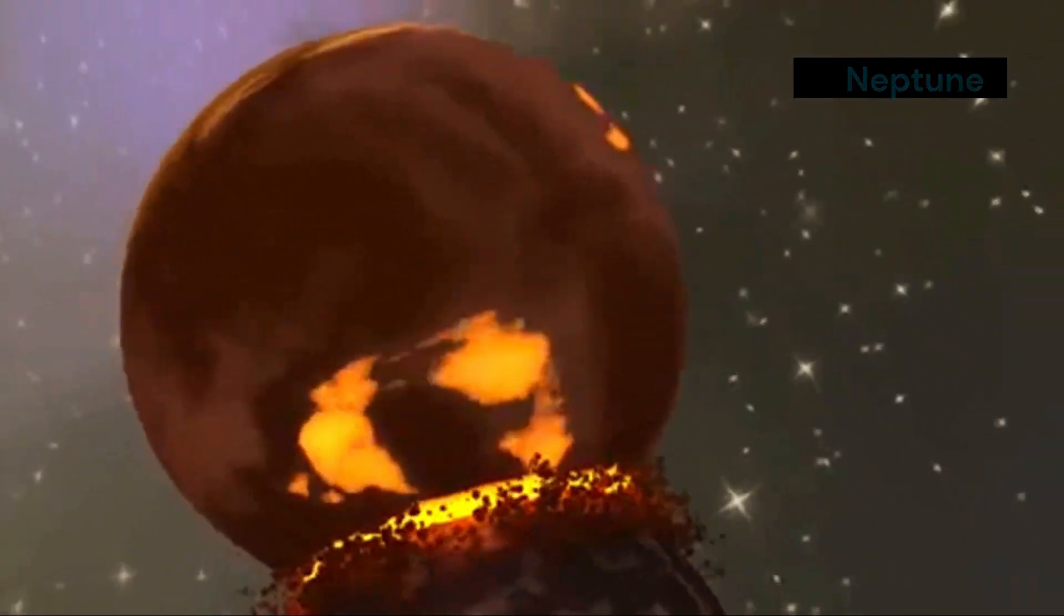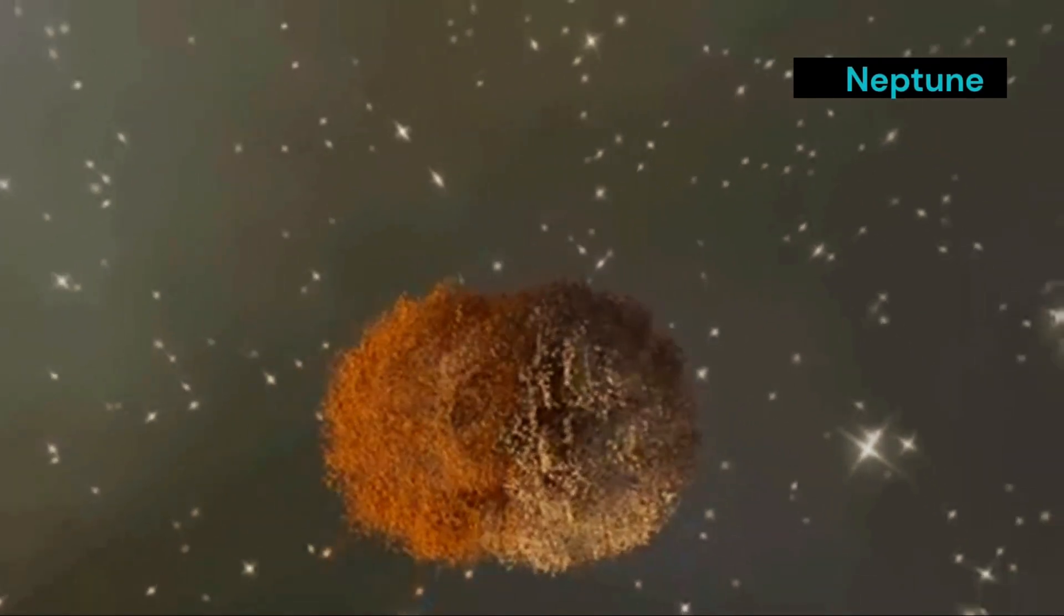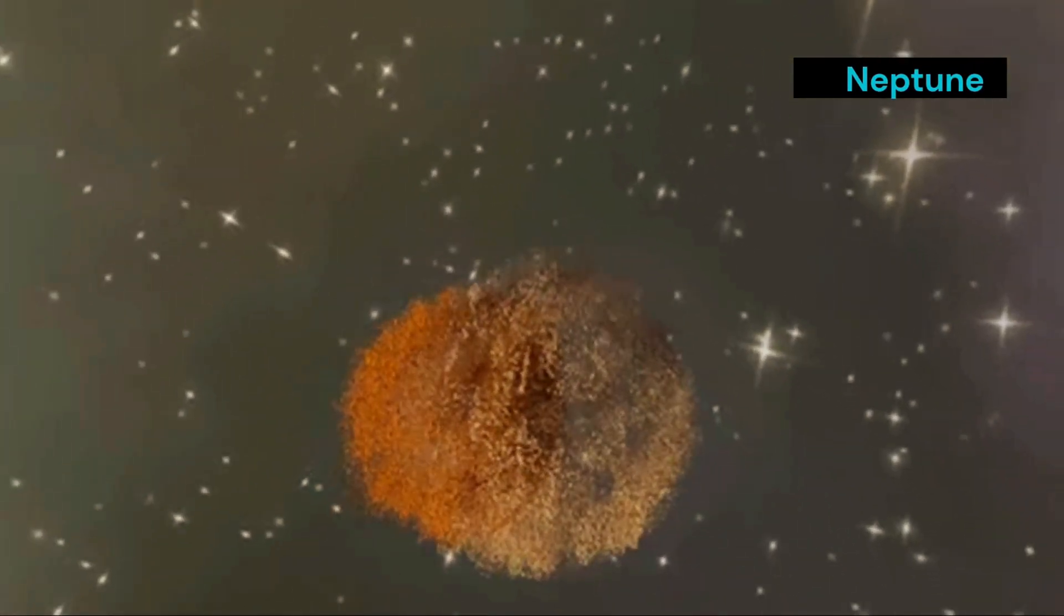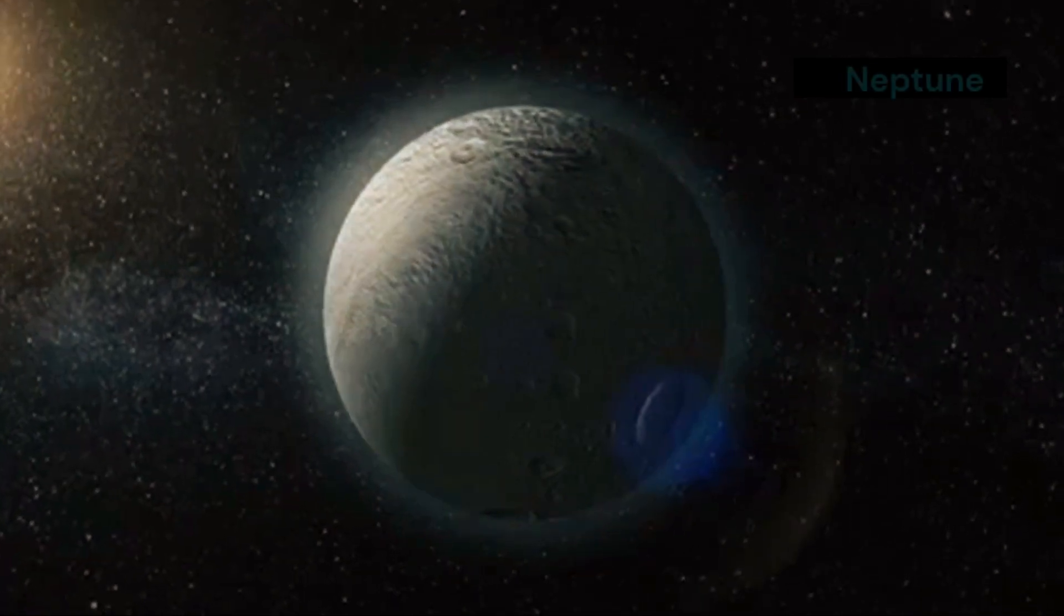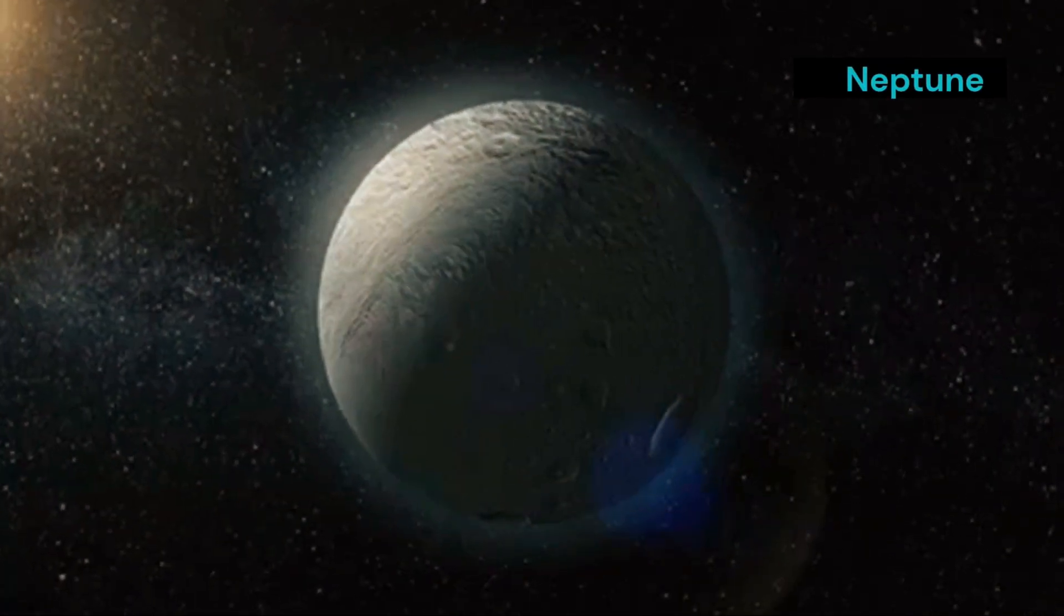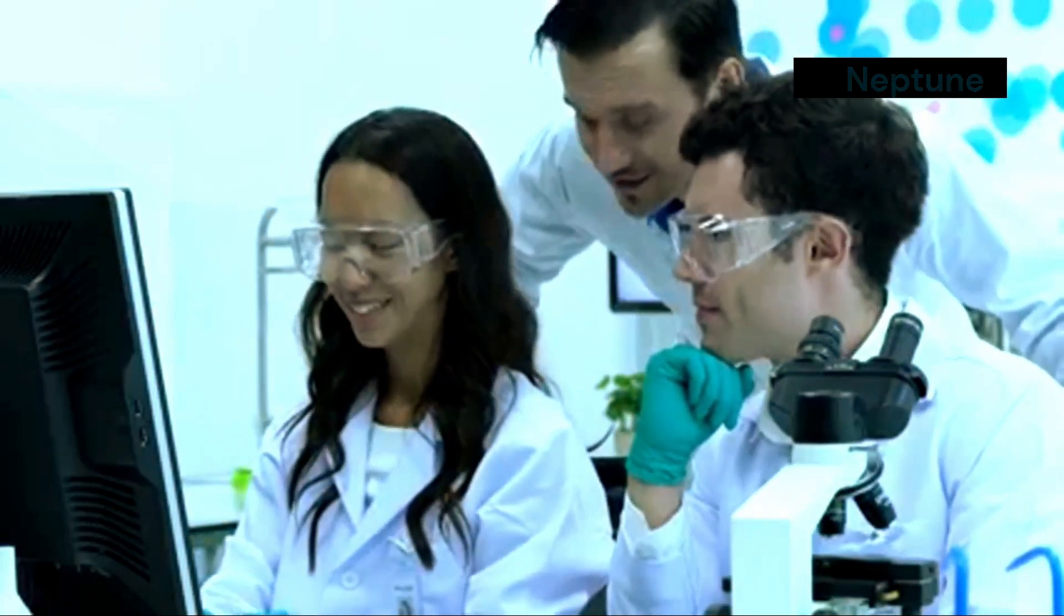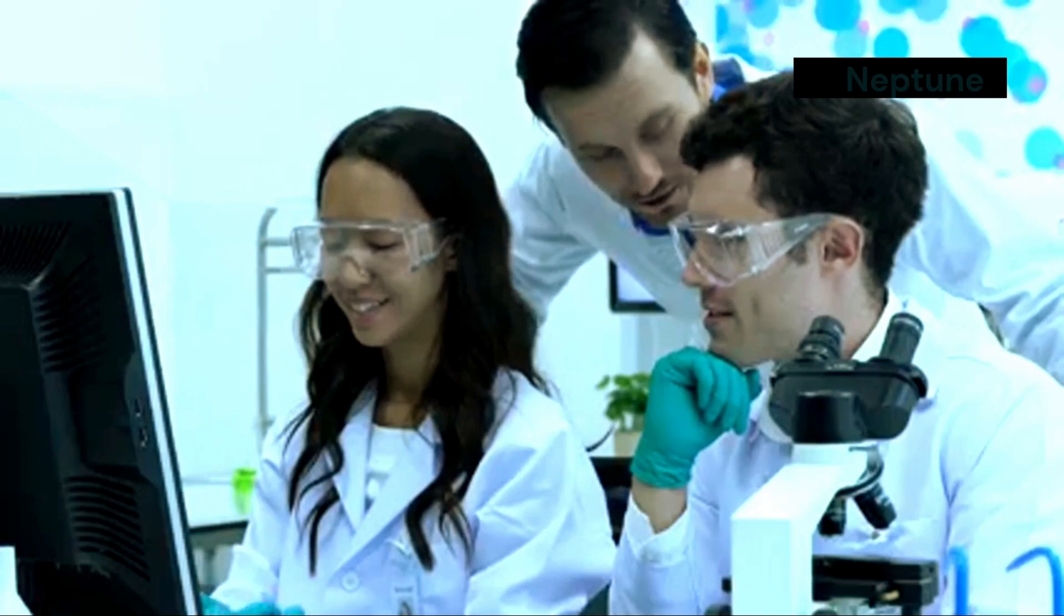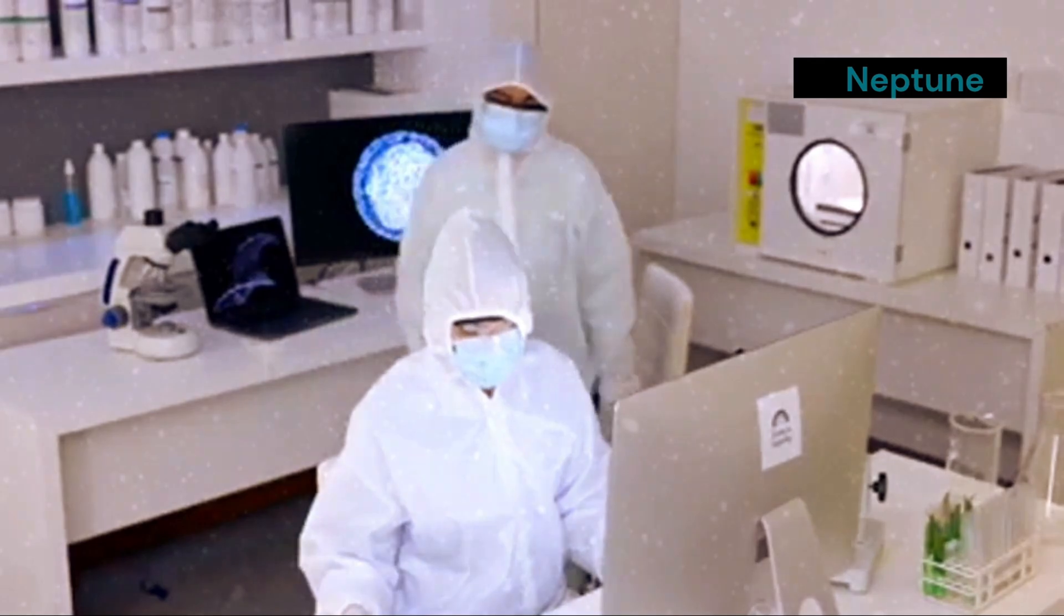Expanding our horizons: exoplanets and beyond. The collision on Neptune also has implications for our understanding of exoplanets, planets that orbit other stars. Collisions are likely common in other planetary systems as well. By studying the aftermath of the Neptune collision, we can learn more about how collisions affect the evolution of planets in general. This information can help us to better interpret observations of exoplanets.